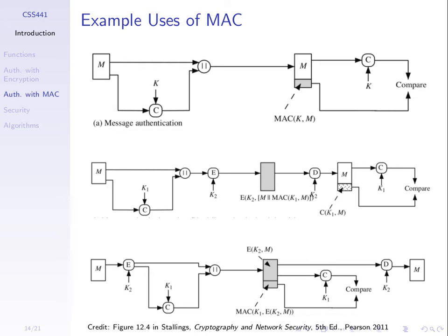We calculate the tag or the MAC value and send both the message and the tag concatenated to the end. The receiver receives the message and the tag. They know the key — it's assumed we've shared a secret MAC key between sender and receiver. The receiver calculates using the same MAC function on the message using the known key and gets a calculated tag as output.